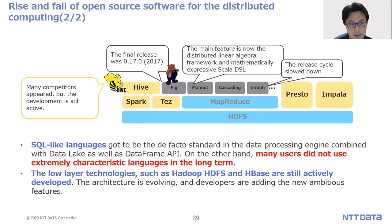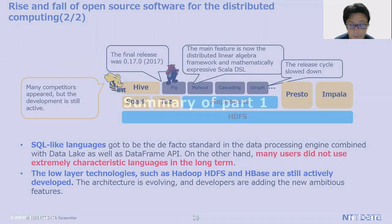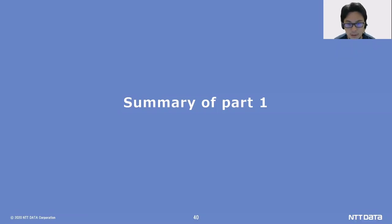However, SQL-like language became the de facto standard in data processing engines combined with data lakes, as well as the DataFrame API. On the other hand, many users did not continue to use extremely characteristic languages in the long term. Low-layer technologies such as Hadoop HDFS and HBase are still actively developed; the architecture is evolving and developers are adding ambitious new features. Finally, I will summarize Part 1.